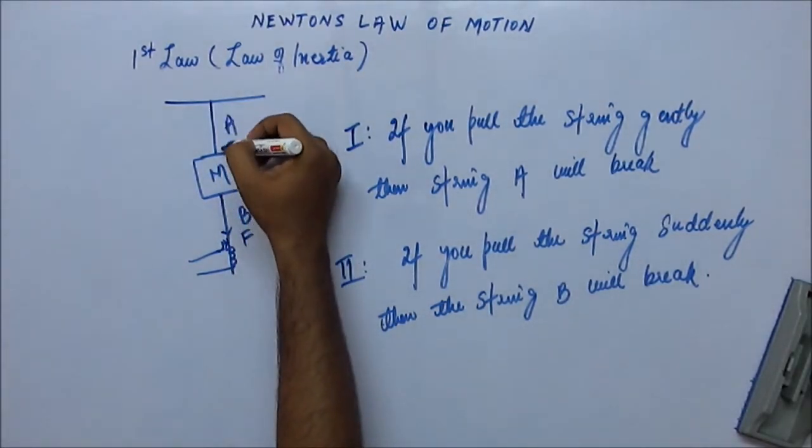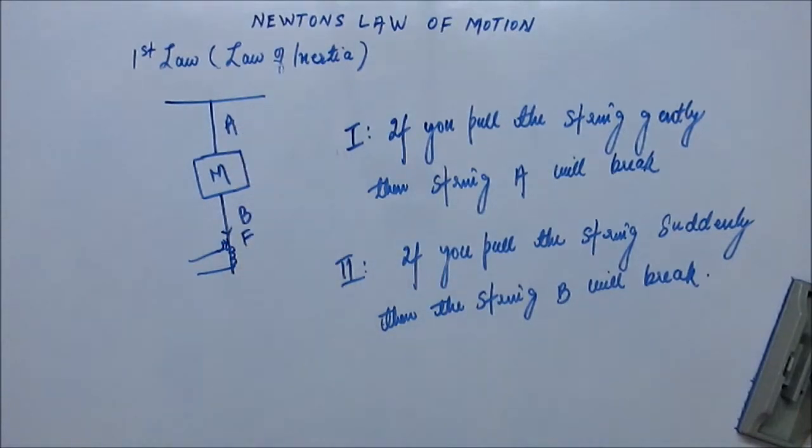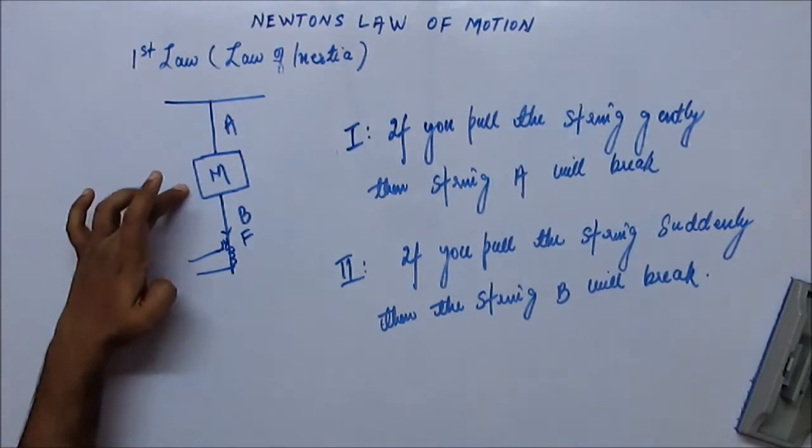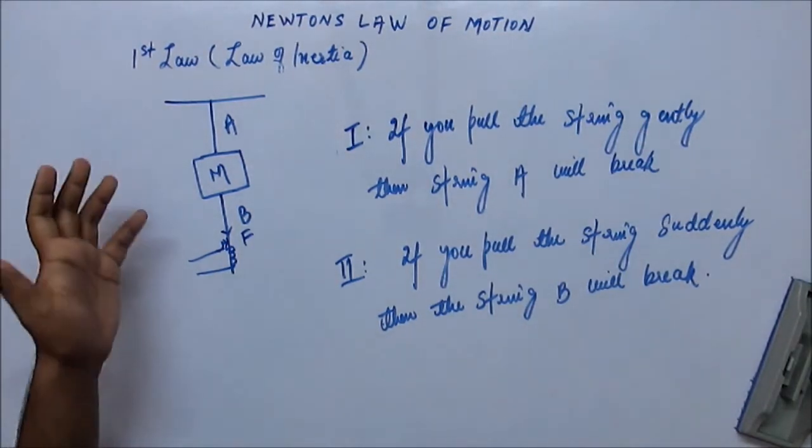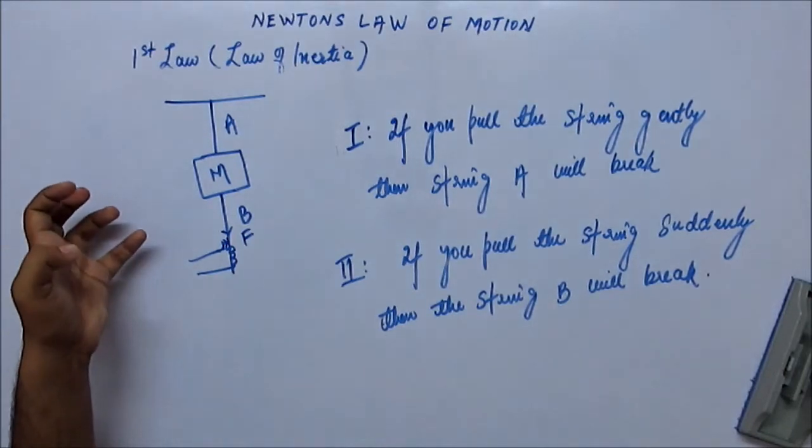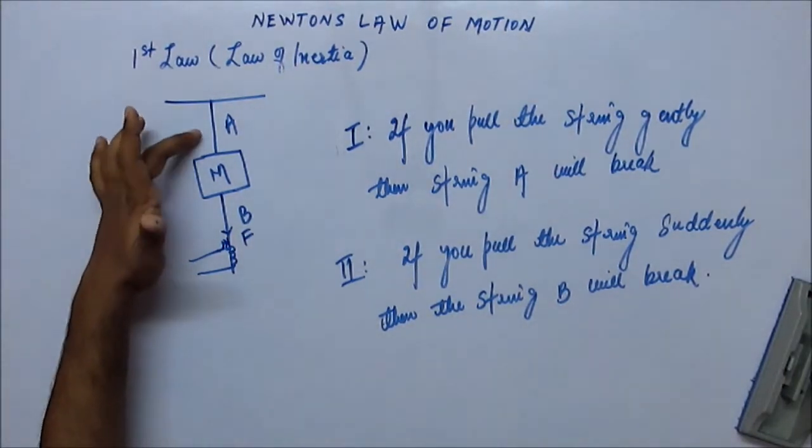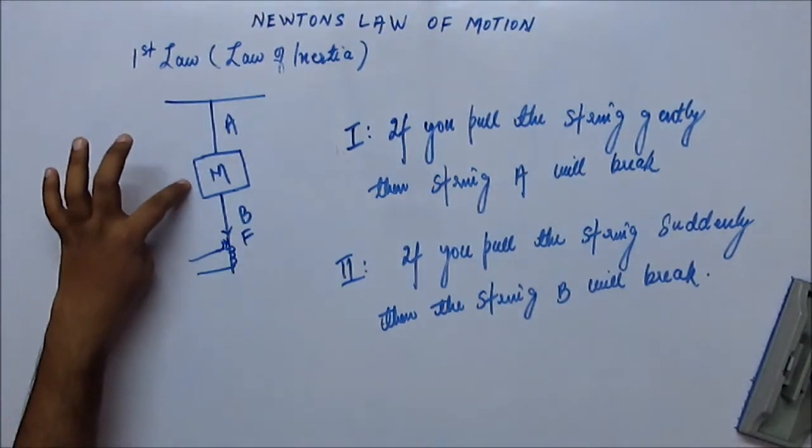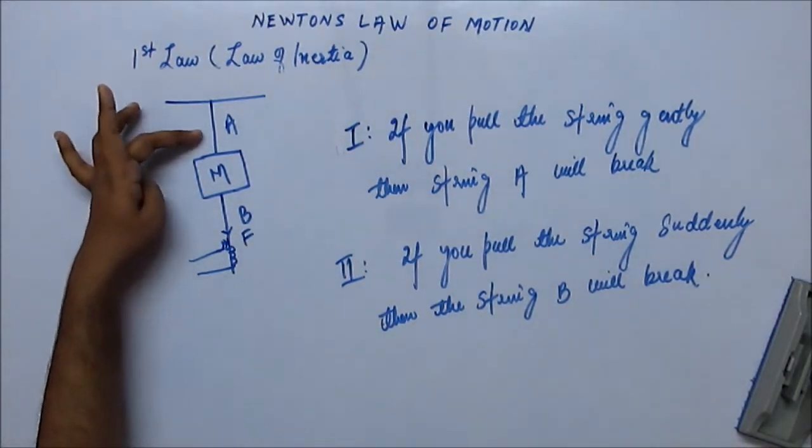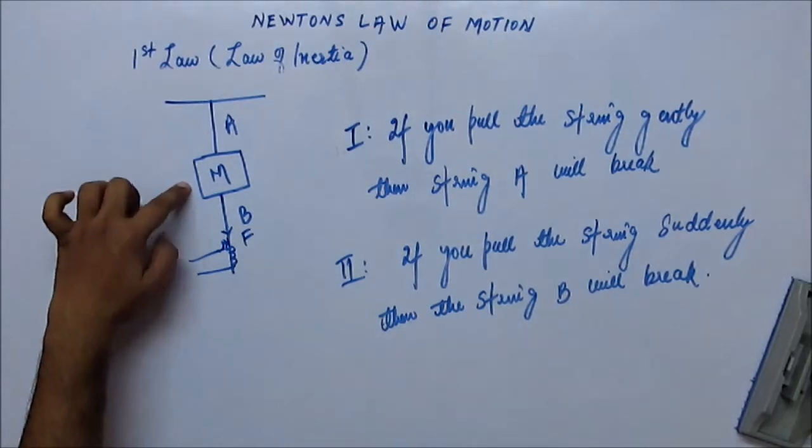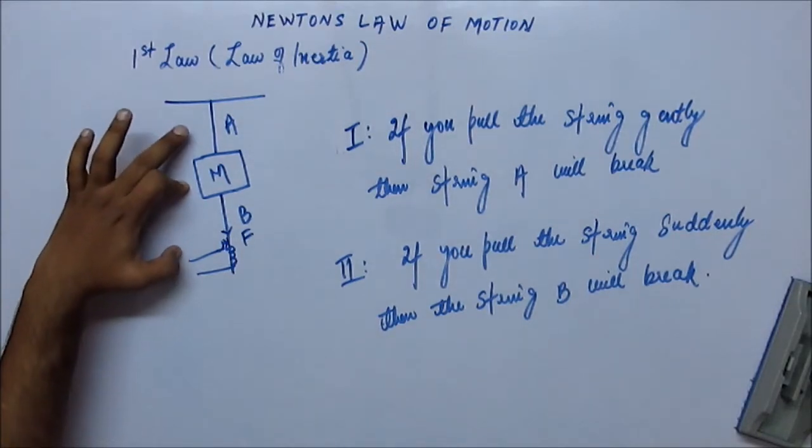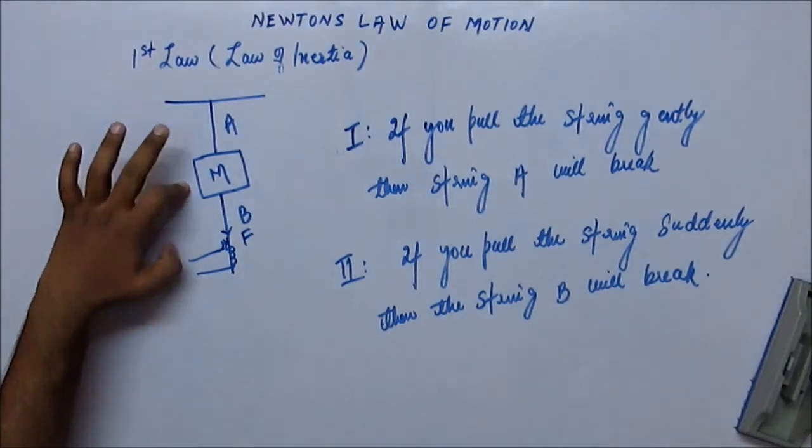Now, let's talk about how much tension will be there in string A. Now, see, string A has to sustain both the force that you are pulling and the weight of this block. Previously, the mass M was hung only by string A. And now, so the tension in this string was to support the mass of this block. And now, tension in this string will be supporting the mass of this block and plus the force that you are applying. So, string A has a greater tension compared to string B.